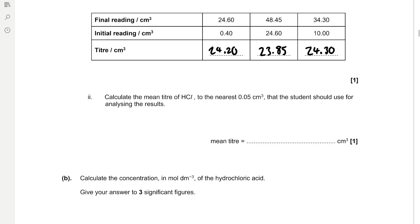Calculate the mean titre of HCl to the nearest 0.05 cm³ that the student should choose for analysing the results. When calculating the mean titre we must use the concordant titres, which are titres within 0.1 cm³ of each other. As you can see, 24.20 and 24.30 are within 0.1 cm³ of each other and 23.85 is not concordant, so we remove that one. The mean is 24.20 plus 24.30 divided by 2, which is 24.25 cm³.